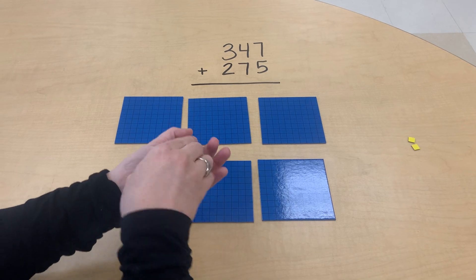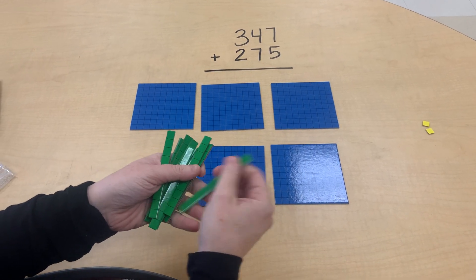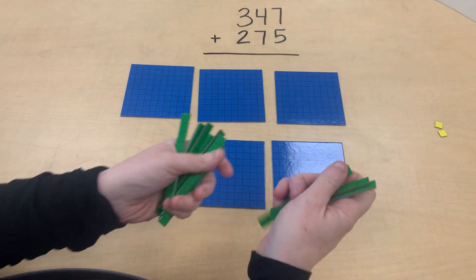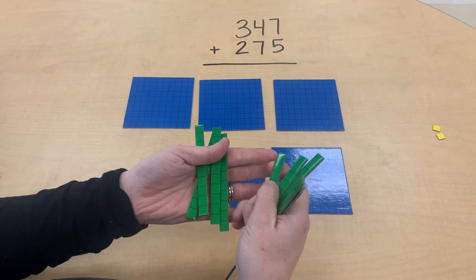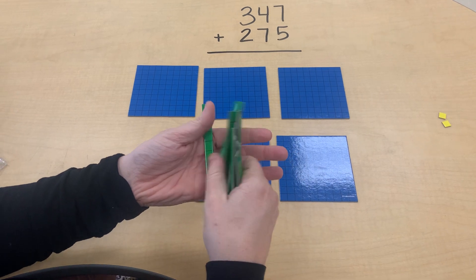So our four tens, our seven tens, and our one ten. One, two, three, four, five, six, seven, eight, nine, ten, eleven, twelve.